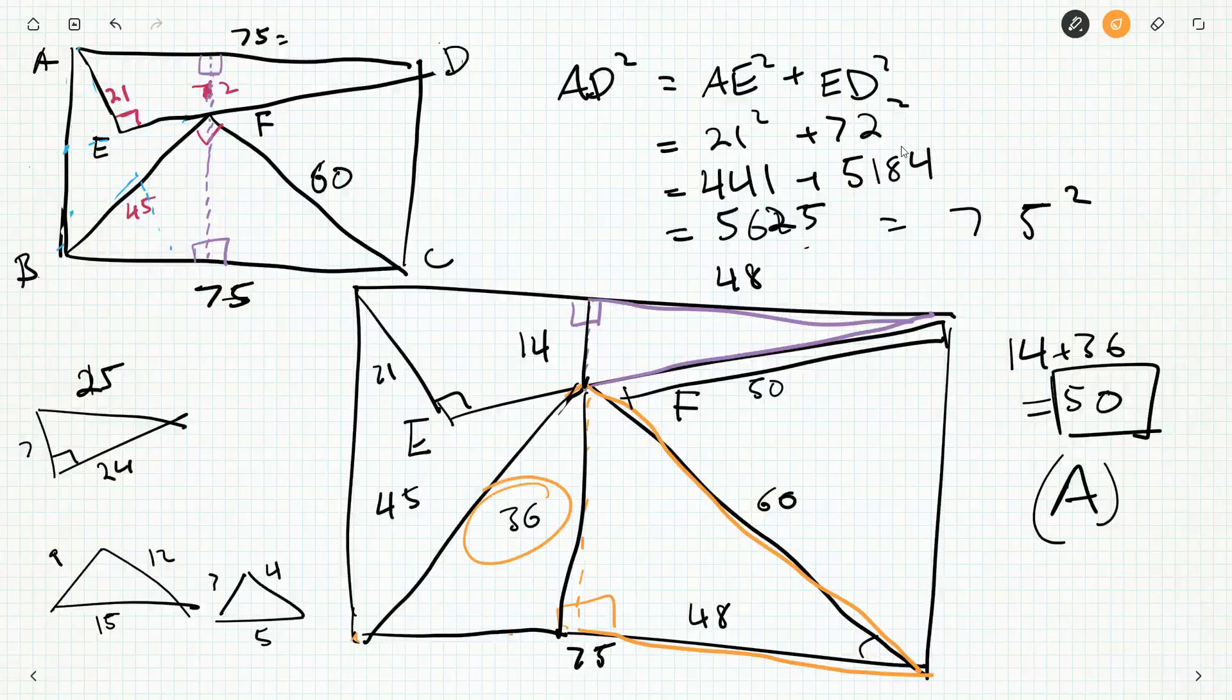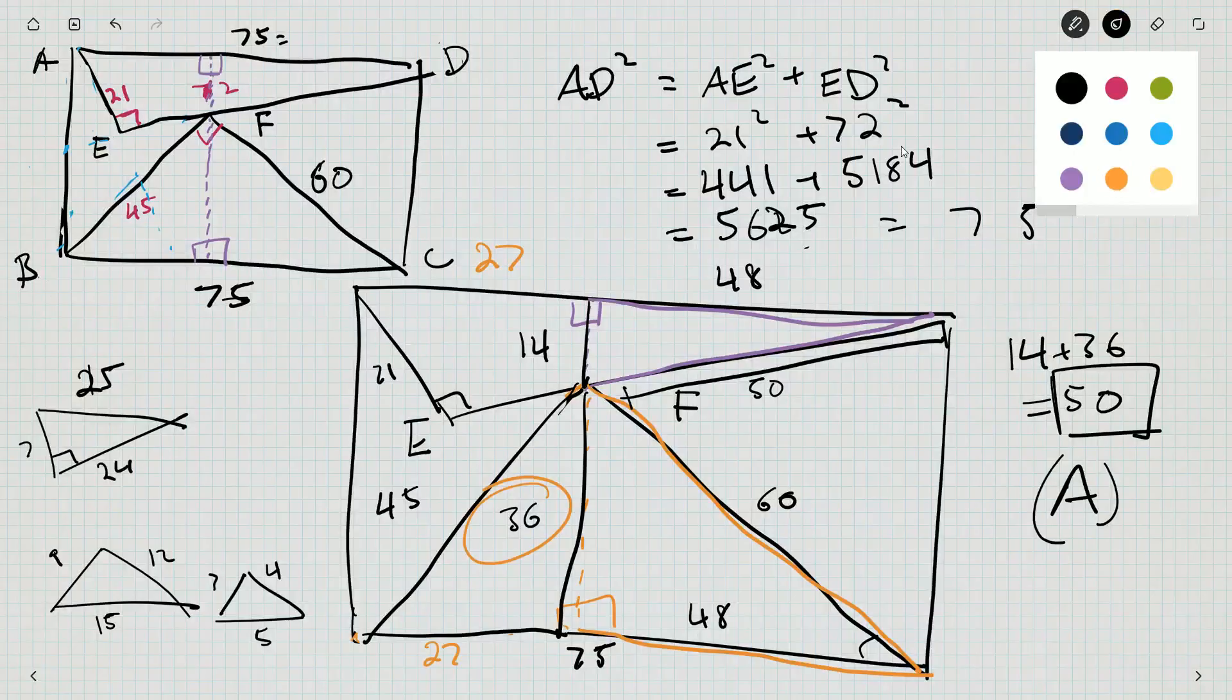Probably would have worked out just okay if I had used the other one. 45 would have been the 5, 36 is 4 times 9, so we would get 3 times 9, 27 down here. 27 would have come up here, and then 75 minus 27 is 48, and we would have gotten that. So it would have worked out all fine in the end anyway.